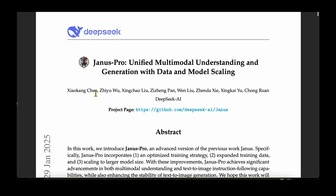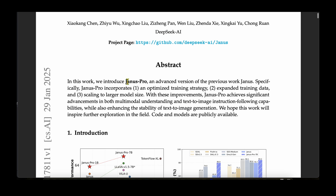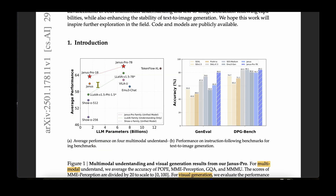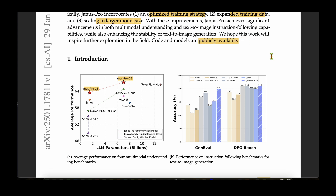In this video, let's look into Janus Pro, which is a model from DeepSeek. It's a unified multimodal understanding and generation model with data and model scaling. Janus Pro is an advanced version of the previous work, Janus. The main contributions are an optimized training strategy, expanded training data, and scaled model size. They have introduced two model sizes: Janus Pro 1B and Janus Pro 7B, both publicly available.